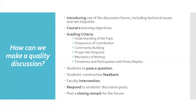The first discussion in an online course should serve as a way of introducing students to the use of the discussion forum, including its technical issues and net etiquette. The discussions should be built around the course learning objectives to ensure relevance. Discussion boards have to be a graded situation so that students will take them seriously. Grading criteria could include demonstration of understanding through critical thinking, uniqueness of contribution, community building through collaboration, proper net etiquette, and mechanics of writing, or timeliness and participation with posts or replies.